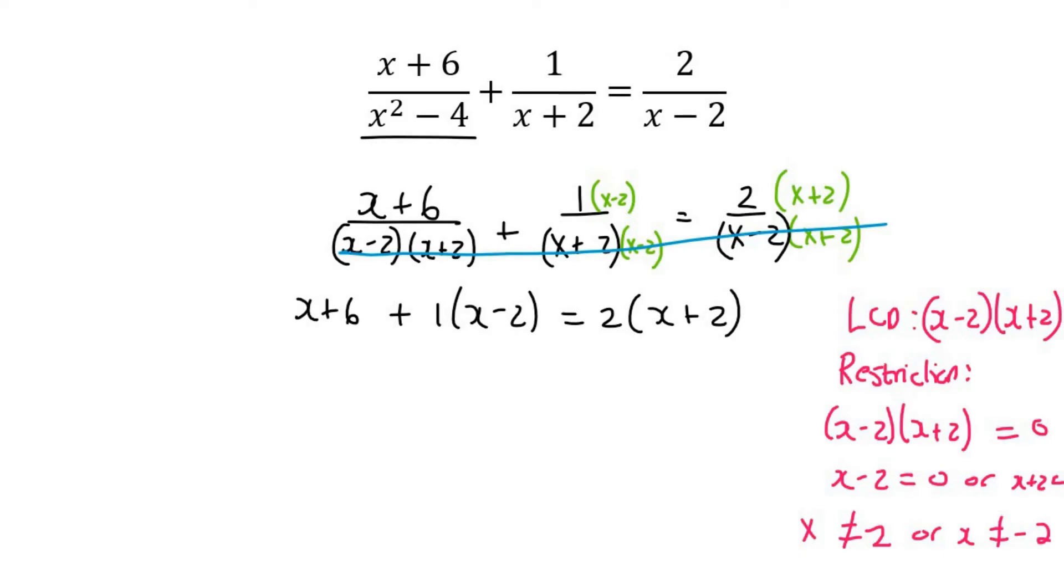Now we simply multiply everything through, so that's plus x-2. This is an easy one. What we're going to find is that 2x+4 equals 2x+4.